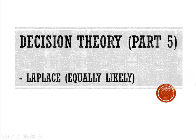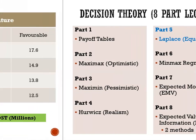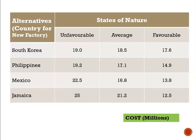Welcome back everyone. We're at part five of our eight-part lecture on decision theory, and now we are looking at Laplace, otherwise called the equally likely criterion. In part one we looked at interpreting payoff tables, part two was maximax, part three maximin, part four Hurwicz, and now we're at part five.